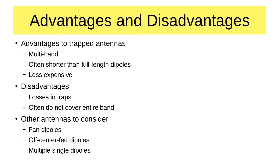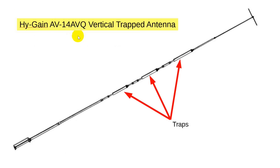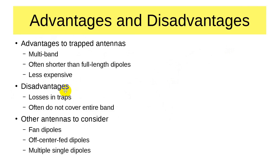Let's look at the advantages and disadvantages of trapped antennas. Advantages: they are easily multiband antennas, often shorter than full-length dipoles, and less expensive than some more exotic antennas — certainly less than today's verticals. This trapped vertical covers 40, 20, 15, and 10 meters for less than $300. The disadvantage is you have losses in the traps unless they are very high-Q, but high-Q also means the antenna won't cover the entire band — only part of it. You can tune it for the part of the band you want, but it takes some work.